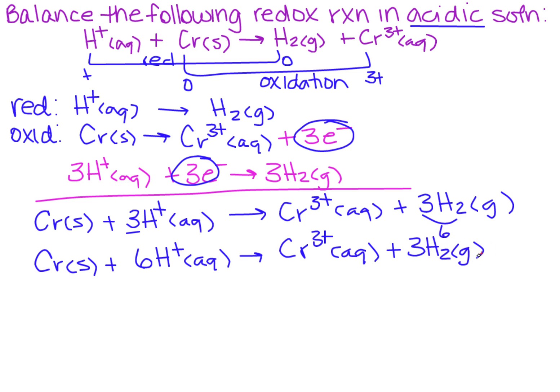So my hydrogens are balanced, but what did that do to my overall charge? On the left side I've got a six plus and on the right side I've got a three plus. So how am I going to get that to balance again?